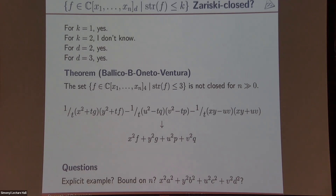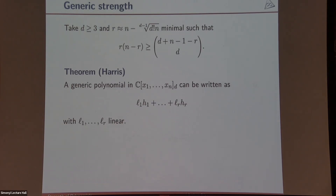Some more concrete open questions: can someone give an explicit example where this works, or at least a bound saying it works for n at least a million? Even something that should be easy: if for the degree-two polynomials you just take one variable each — so f = a², g = b², etc. — does this degree-four polynomial in eight variables have strength four? I do not know.